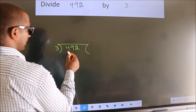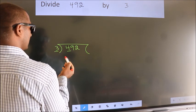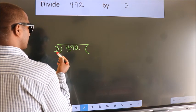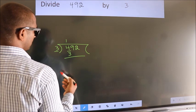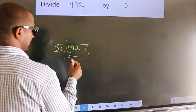here we have 4, here 3. A number close to 4 in 3 table is 3 once 3. Now, we should subtract. We get 1.